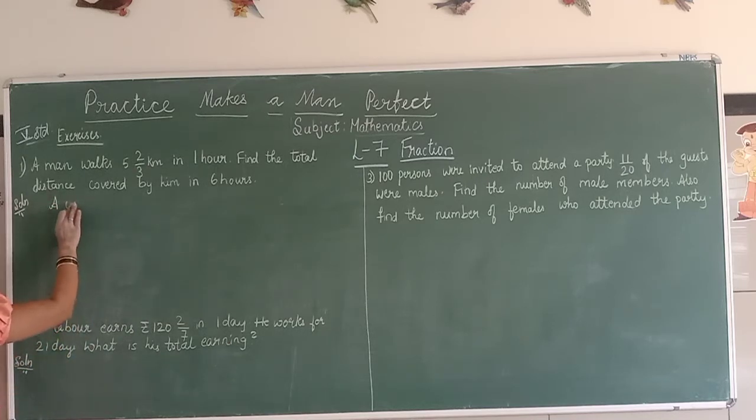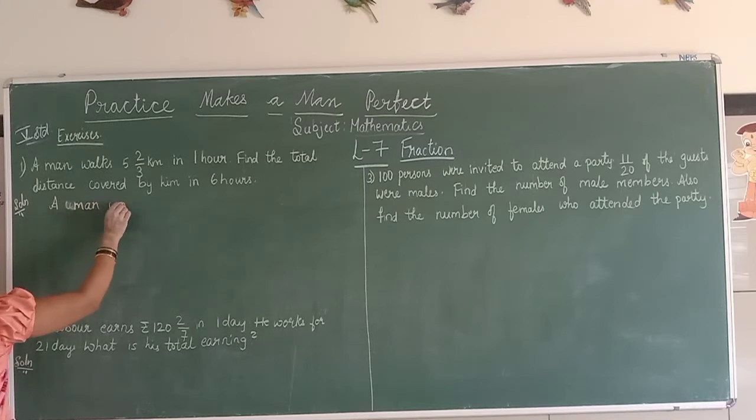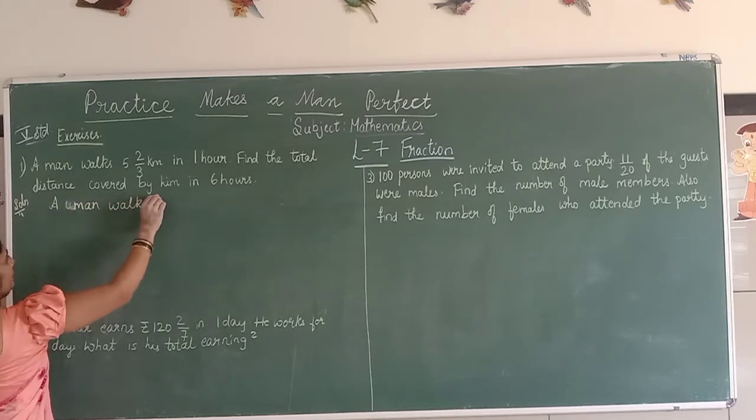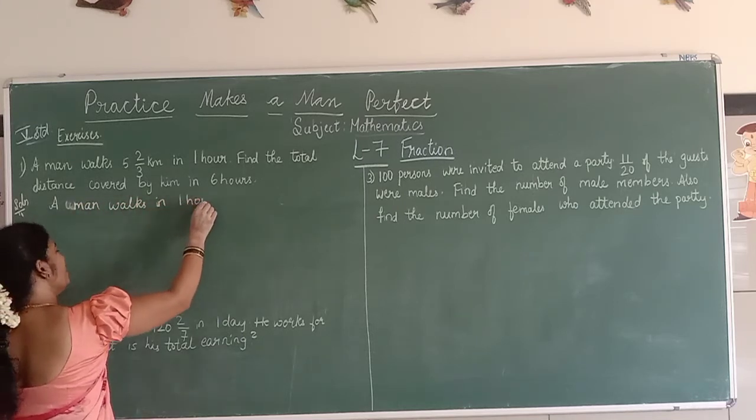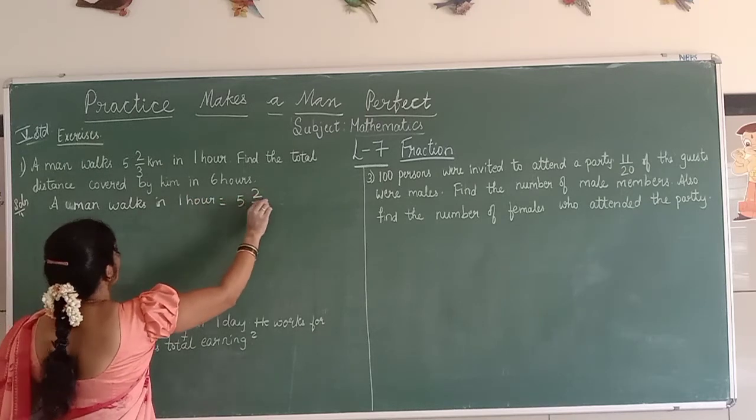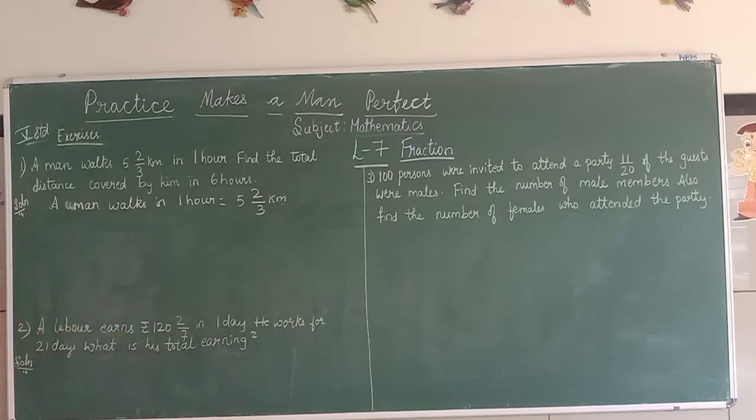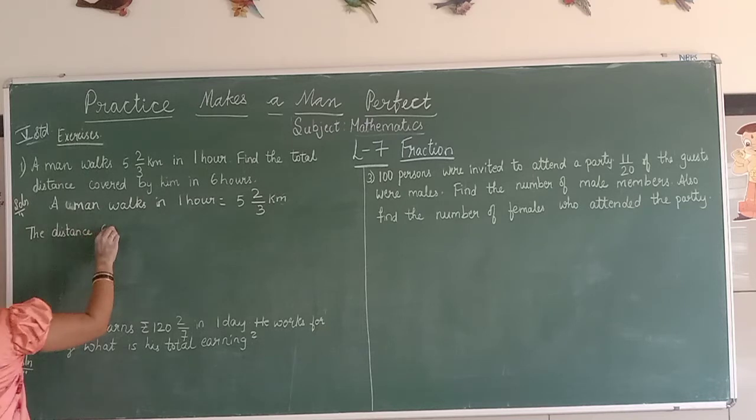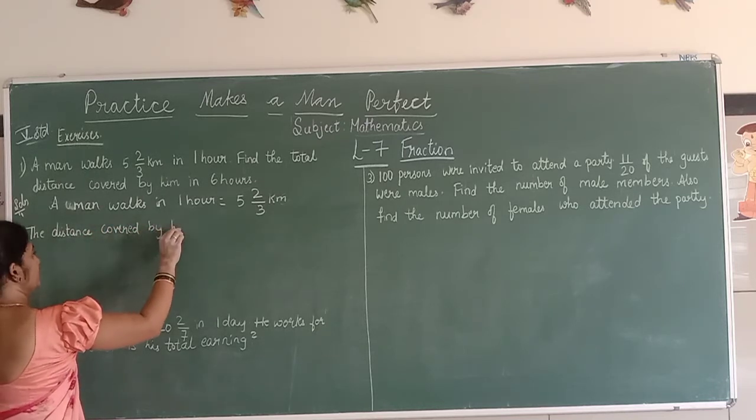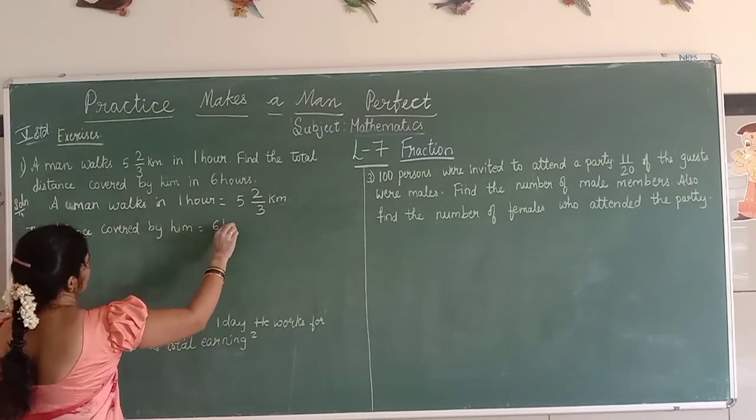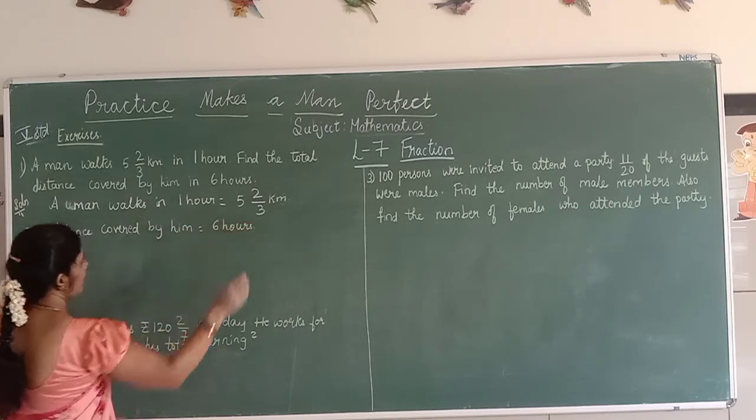A man walks in 1 hour, 5 2/3 km. What do I have to find? The total distance covered by him in 6 hours.